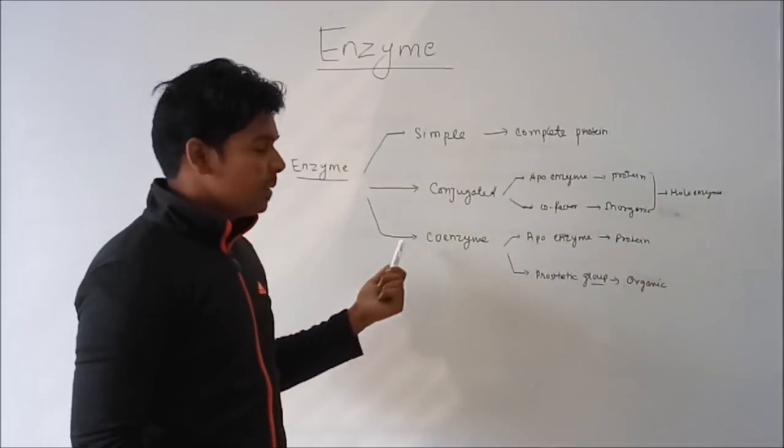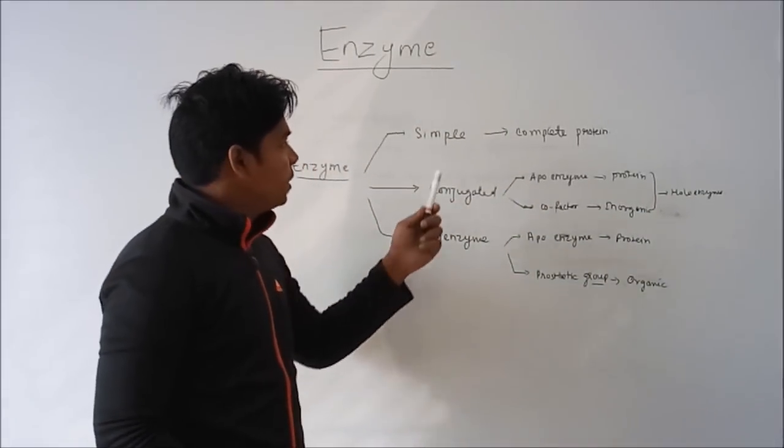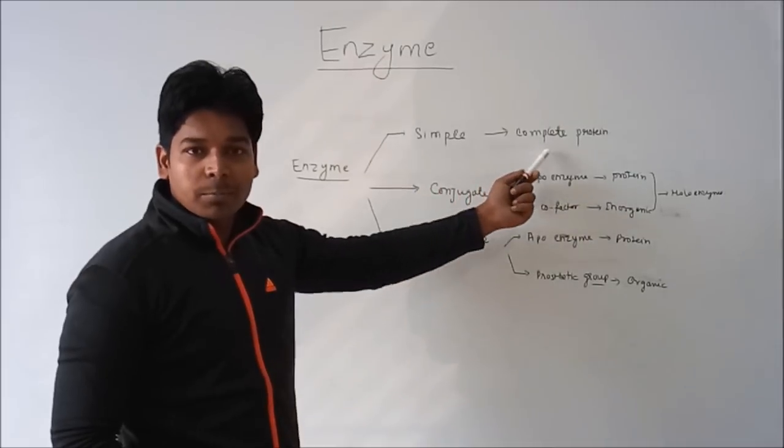First is simple enzyme, second is conjugated enzyme, third is coenzyme. Simple enzyme is completely made of protein.